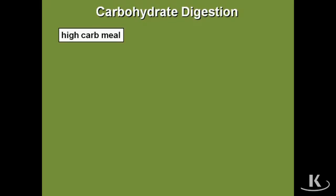Of all that high carbohydrate meal, if you were to ask what percent is free glucose, the answer is hardly any. Most of that high carbohydrate meal is not free glucose. Most of it is made up of starch, which is alpha-1,4 glucose linkages, and every so often an alpha-1,6 linked glucose. Starch is made up of amylose and amylopectin from wheat, barley, and rye. There will also be a lot of sucrose in the cereal and sweet foods, and lactose in the milk.